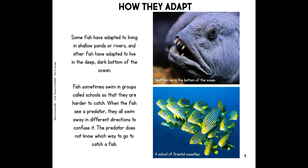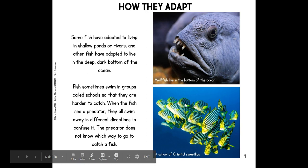How they adapt. Some fish have adapted to living in shallow ponds or rivers, and other fish have adapted to live in the deep, dark bottom of the ocean. Here we see the wolf fish — it lives at the bottom of the ocean. It looks a little spooky! Fish sometimes swim in groups called schools so that they are harder to catch. When fish see a predator, they all swim away in different directions to confuse it. Here we have a school of oriental sweetlips — that's the name of this fish.